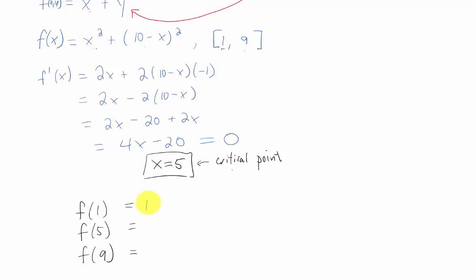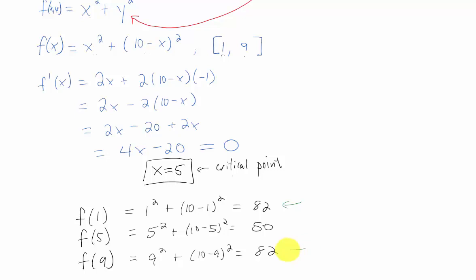f of 1 is going to be 1 squared plus 10 minus 1 squared, which if I'm not mistaken is 82. f of 5 is going to be 5 squared plus 10 minus 5 squared, which should be 50, and f of 9 should be 82. So obviously these two values of 82 are the maximum, and this value of 50 of our function is a minimum.